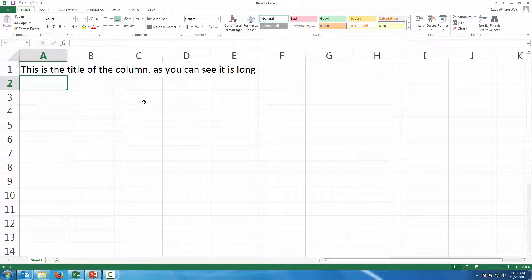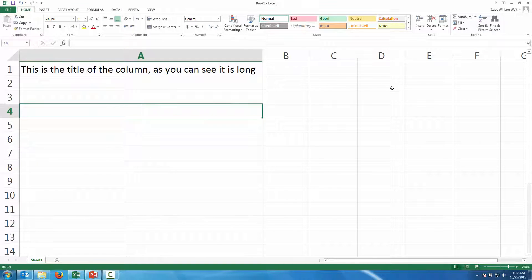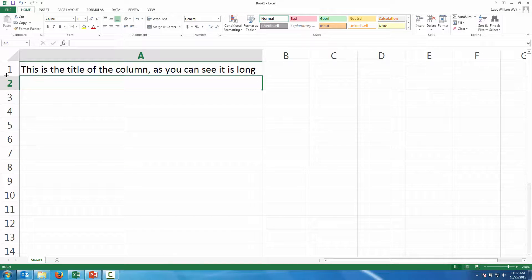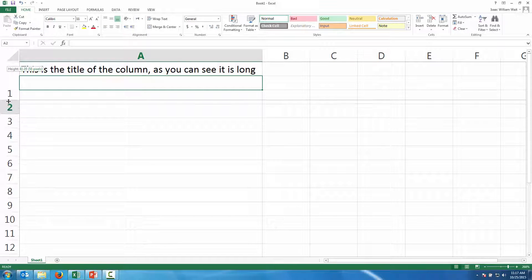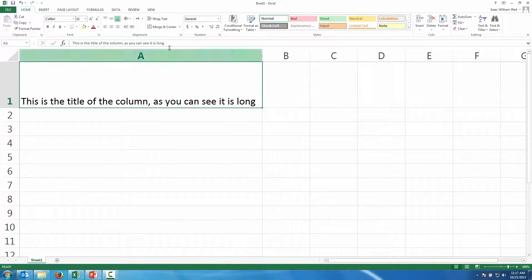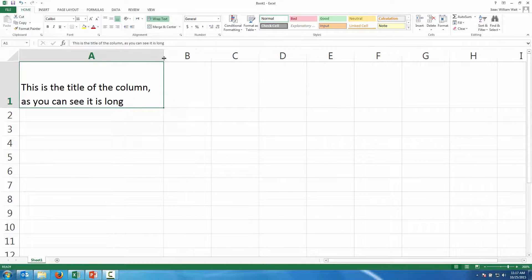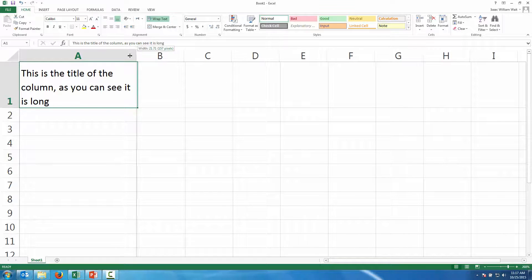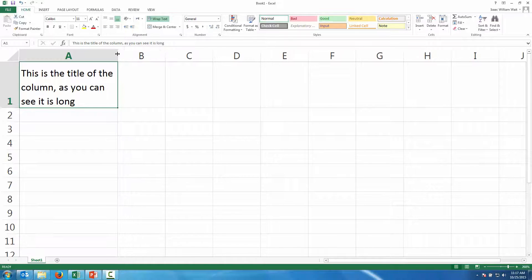You don't want to have that many words because it's just going to make your page really wide. So something you can do is you can drag this down a bit to make the row taller, and then click on Wrap Text, and it will allow you to make the column width a bit more compact.